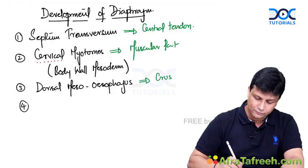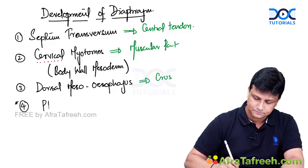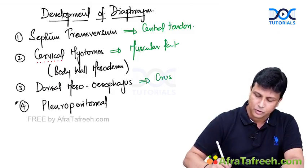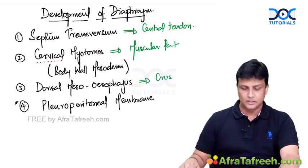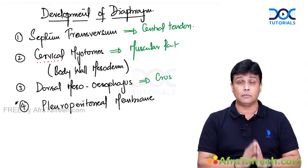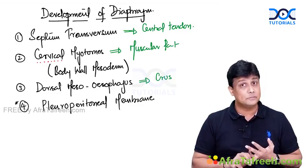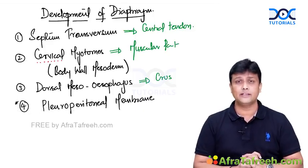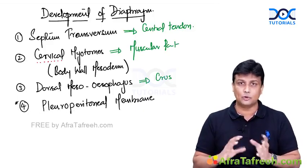Welcome to the most important one for your exams: the pleuroperitoneal membrane. The pleuroperitoneal membrane also contributes to the formation of the diaphragm. So there are four structures contributing: number one, septum transversum; number two, the cervical myotomes; number three, the dorsal mesoesophagus; and number four, the pleuroperitoneal membrane — and it is paired, present on both the right and left sides.